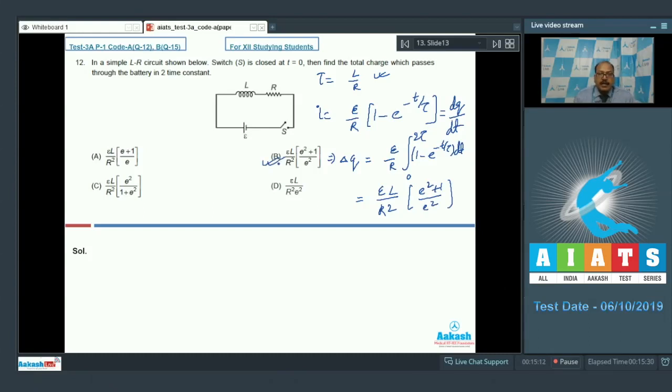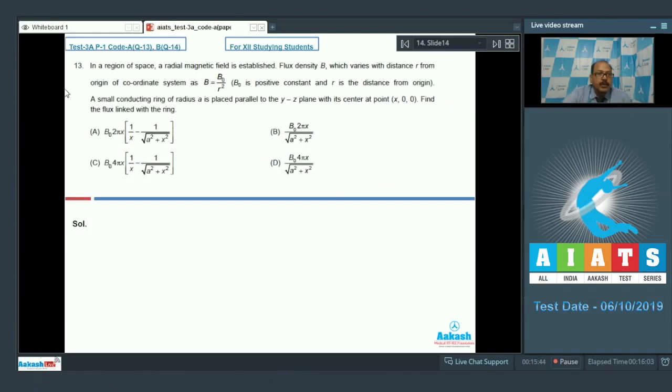Option B is correct. Let us go to the next question now. Question 13 says, in a region of space, a radial magnetic field is established. Flux density B, which varies with distance R from origin of coordinate system as B is equal to B0 by R square. B0 is positive constant and R is the distance from origin.